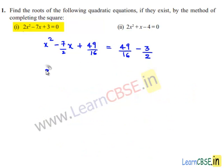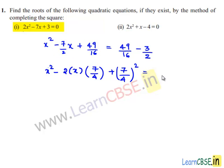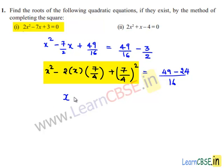Now this can be written as x² minus 2x times (7/4) plus (7/4)², which is of the form a² minus 2ab plus b². This can be written as (a minus b)², so it becomes (x minus 7/4)². This equals 49 minus 24 over 16, which is 25/16.